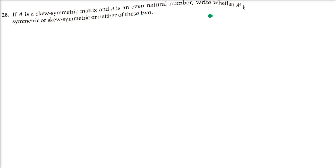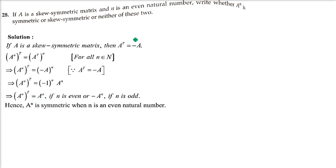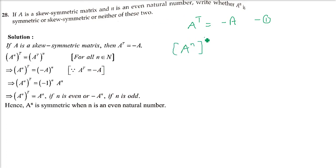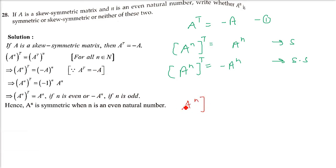The next two questions are important. Here, n is specified as an even natural number, and A is a skew-symmetric matrix, so Aᵀ = -A. We must determine whether Aⁿ is symmetric, skew-symmetric, or neither. Taking (Aⁿ)ᵀ = (Aᵀ)ⁿ = (-A)ⁿ = (-1)ⁿ · Aⁿ.